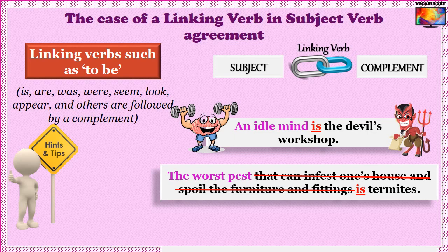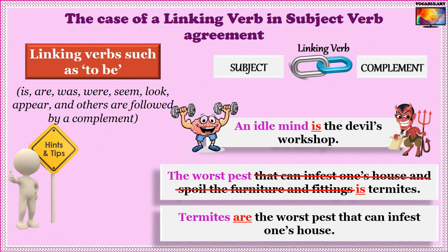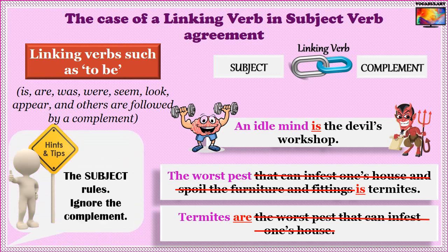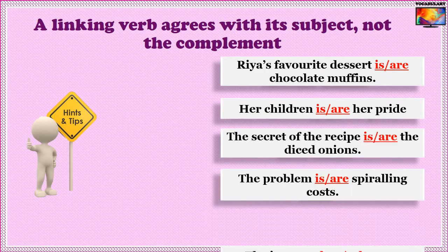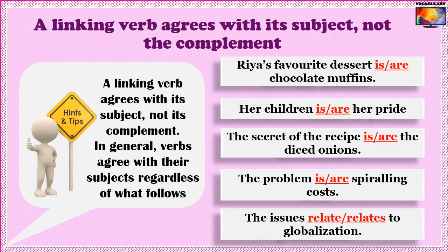If we invert the word order: 'Termites are the worst pest that can infest one's house' — 'termites' is now the plural subject, so 'are' is correct. Whenever the verb 'to be' is used as a linking verb, you must make the verb agree with the subject stated before the linking verb, not with the noun complement that follows the verb.